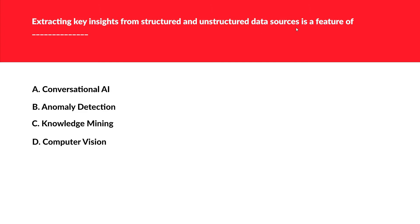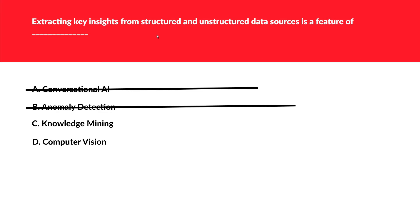The next question is about extracting key insights from structured and unstructured data sources — fill in the blank. Conversational AI is not right since it's not related to talking. Anomaly detection is wrong — it's for detecting unusual things like credit card fraud. Knowledge mining looks to be the correct option because it handles extracting key insights from structured and unstructured data. Computer vision is absolutely not relevant, so knowledge mining is correct.